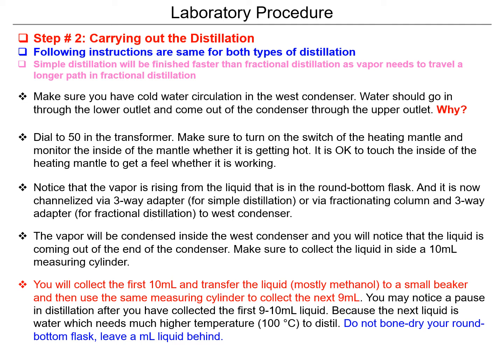However, as students, you should learn the experiment slowly and appreciate the technique, so I may recommend you carry on the experiment rather than stopping it. Once you collect the first volatile liquid, you can continue the experiment to collect the second liquid. In doing so, you need to exchange the measuring cylinder for a new one so that you can collect the second liquid in a separate container.